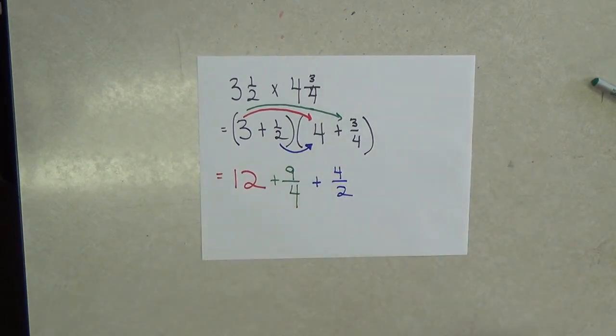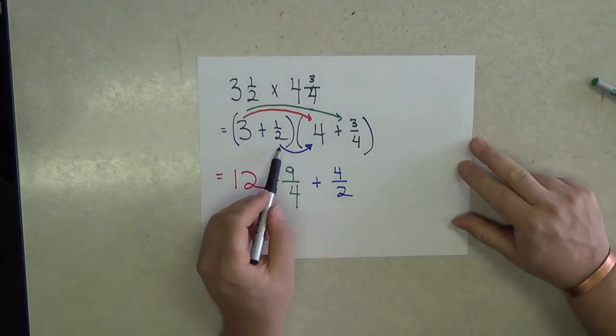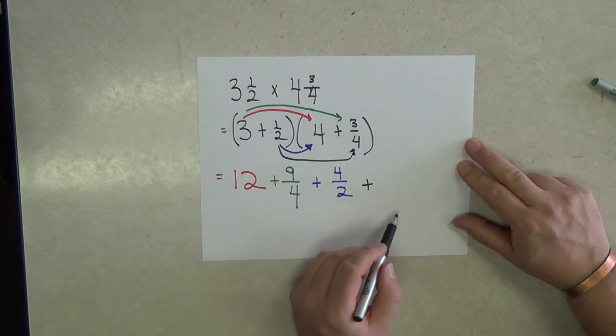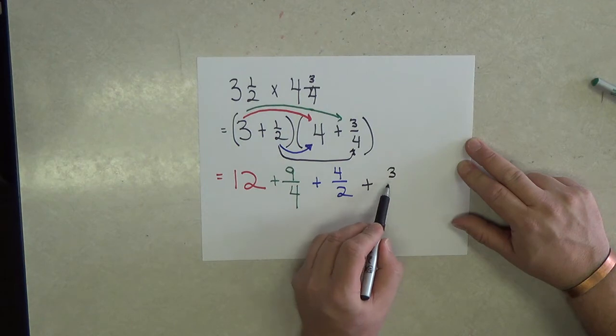And the last partial product that we will determine will come from the fractional parts, 1 half times 3 fourths, which when multiplied together gives us 3 eighths.